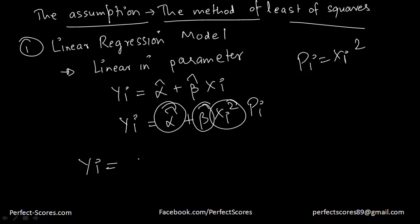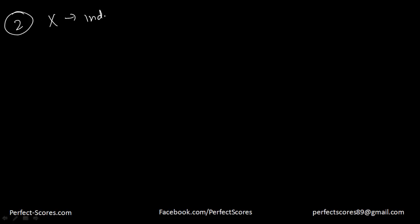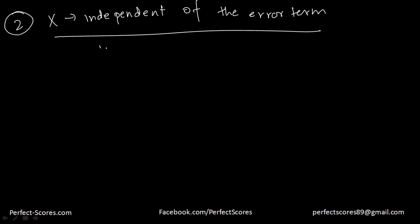So generally the model is yi equal to alpha hat plus beta hat plus the error term into xi. This is the model we generally use. That was the first assumption. Now let's look at the second assumption: the values of x are independent of the error term.